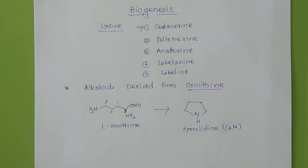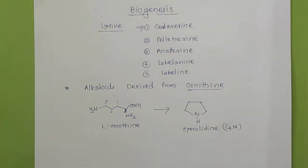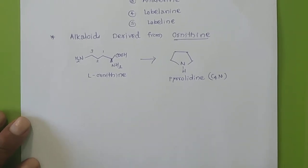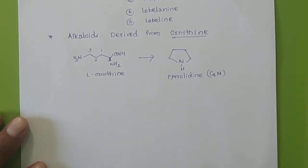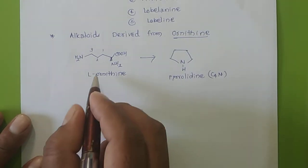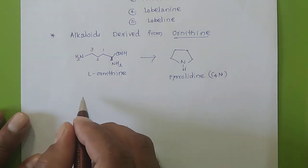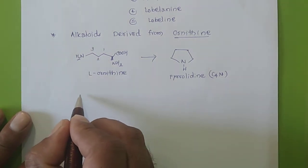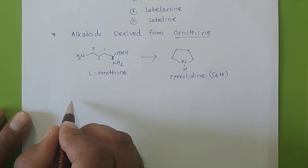From this ornithine we have to prepare a very important alkaloid whose name is tropene. From tropene there are many steps involved, so we will go through them one by one. First, we will take this ornithine and rearrange it in this manner.